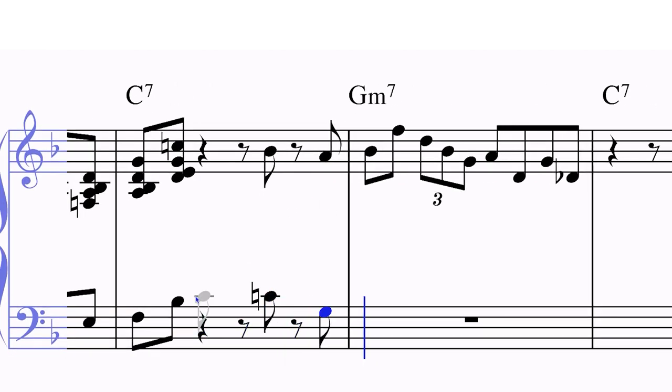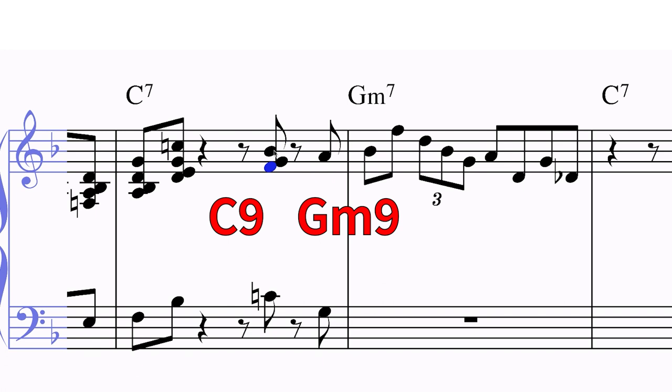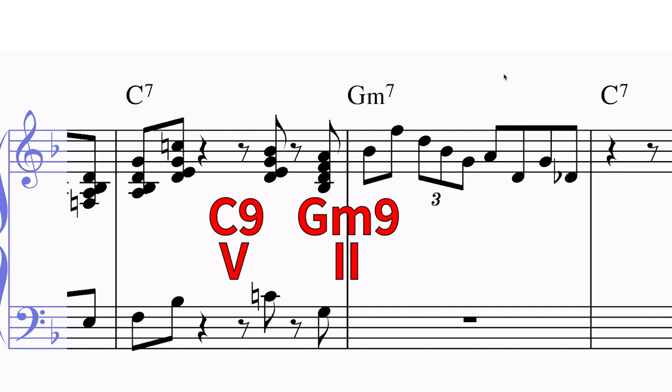Bar 2 is simple. I'll write a C9 and a Gm9. Chords 2 and 5 can often be interchanged when needed.